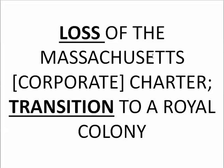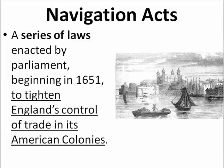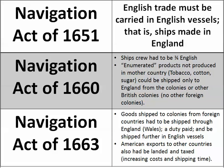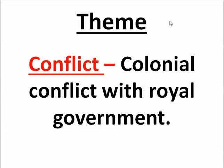So we have the loss of the Massachusetts corporate charter and then its transition — although involuntary — to a royal colony, all because of these Navigation Acts. They didn't want to abide by them, the king wanted them to, and the king and Parliament wanted to protect trade within the colonies. The theme here is colonial conflict with the royal government: Massachusetts Bay Colony had a conflict with King Charles II and the English Parliament.